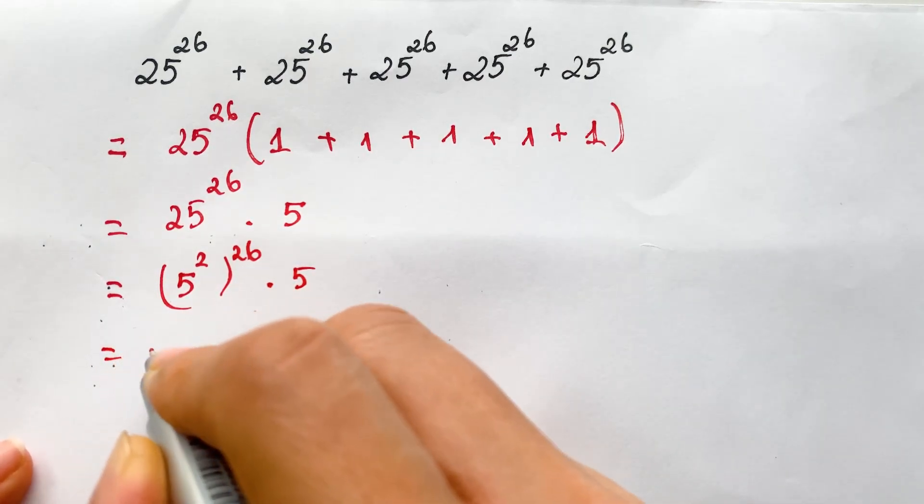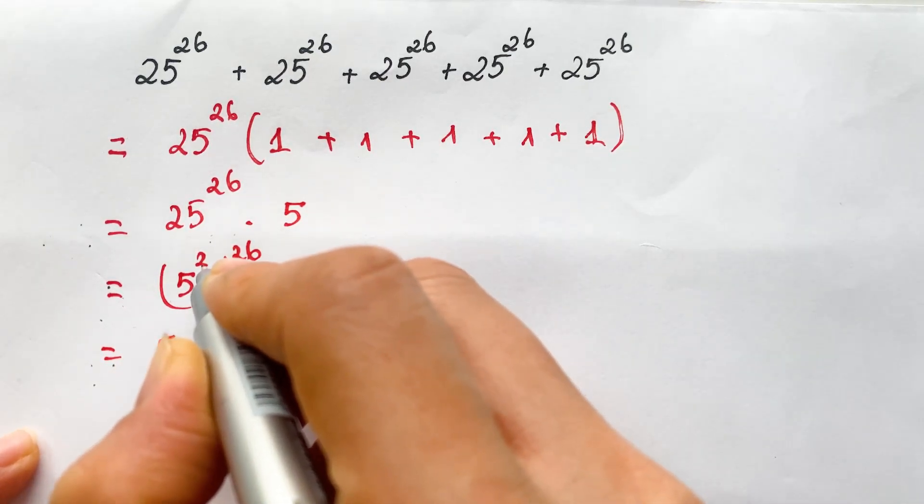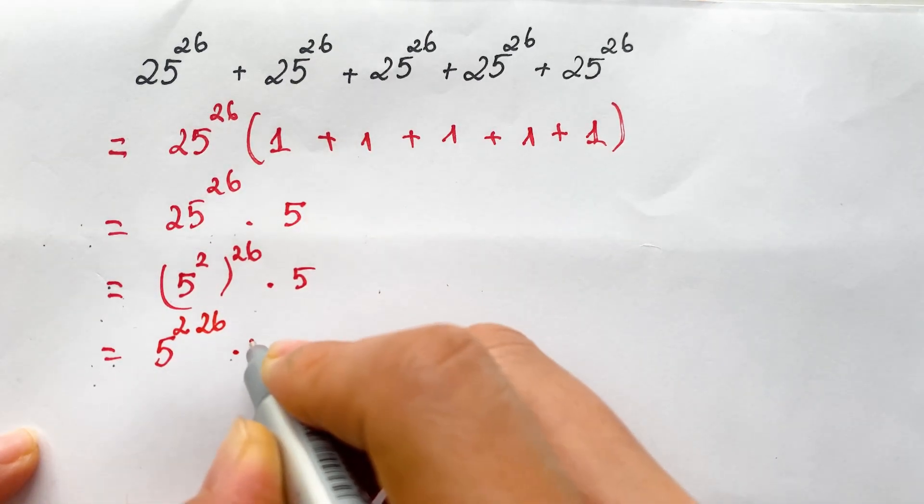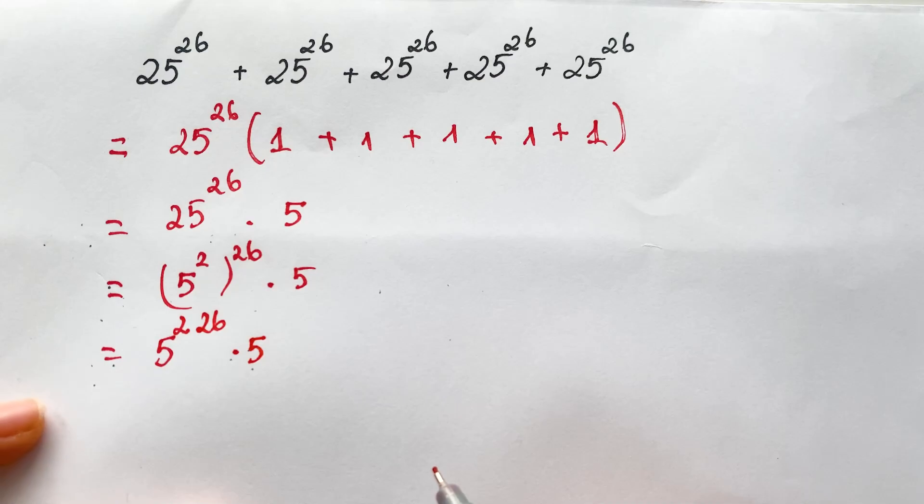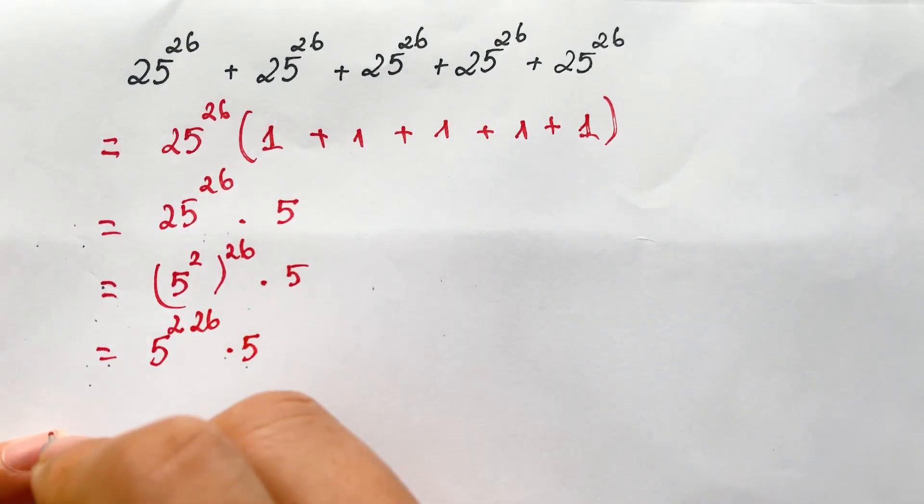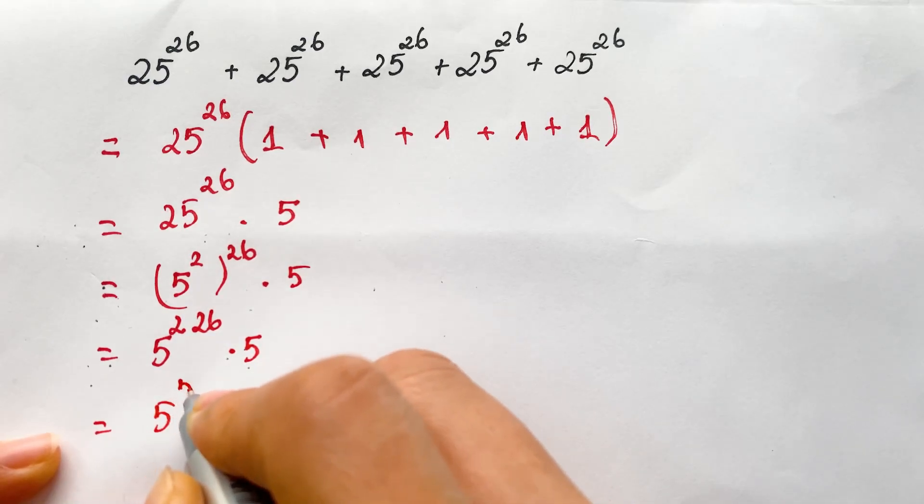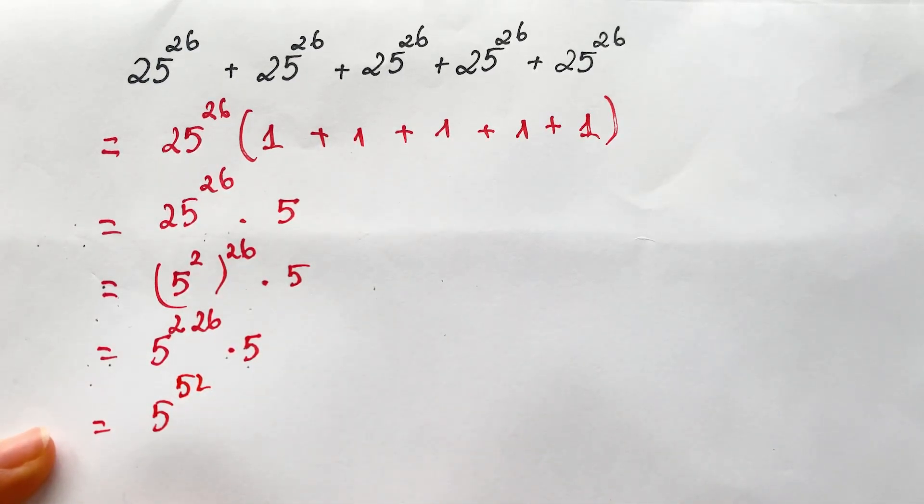And so it equals 5, 2 times 26 and times 5. And it's also 5 to the 52 times 5.